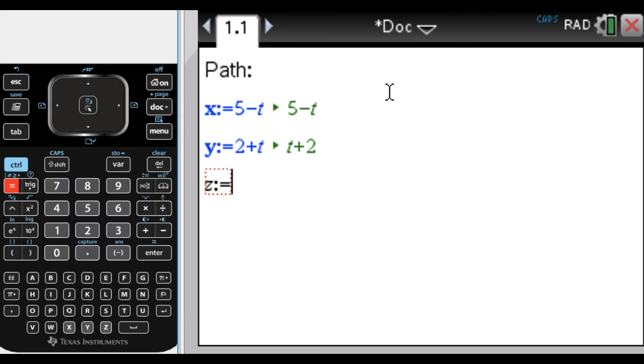And then Z, let's say is, I don't know, 8 minus 8T, whatever, something like that. Okay, so that's going to be the path. So those are the parametric equations for the path.